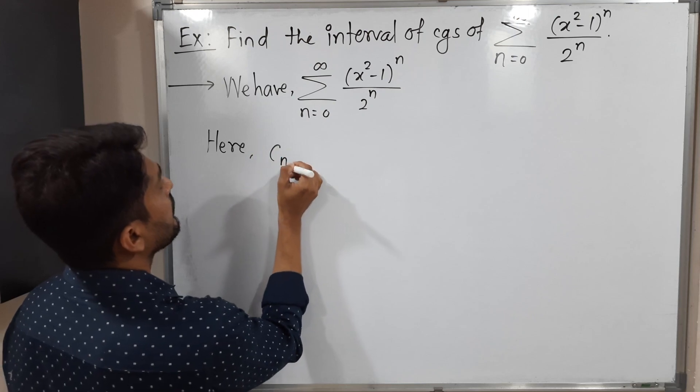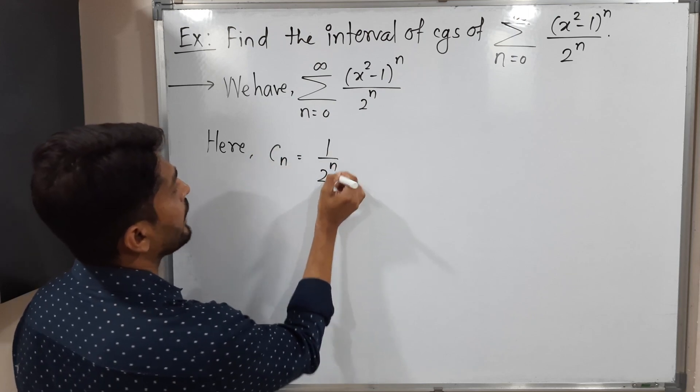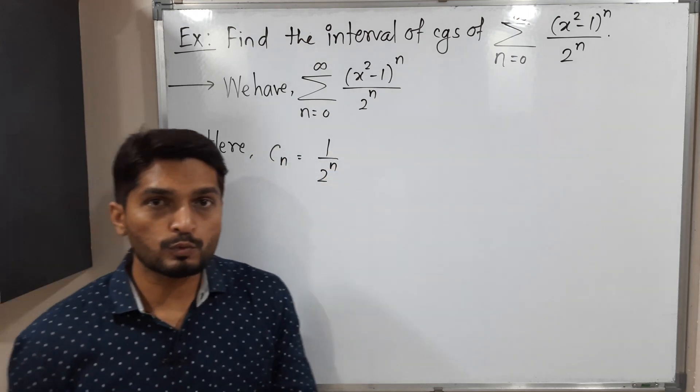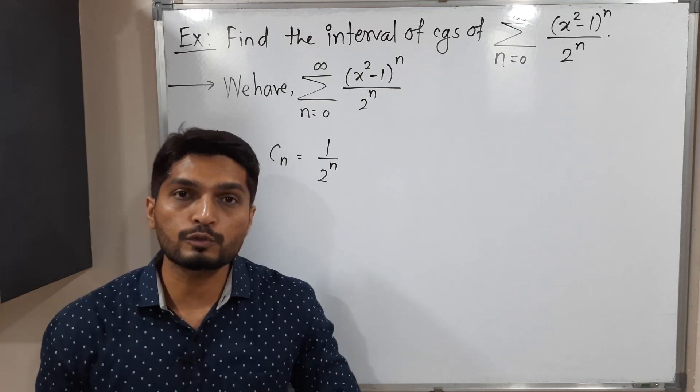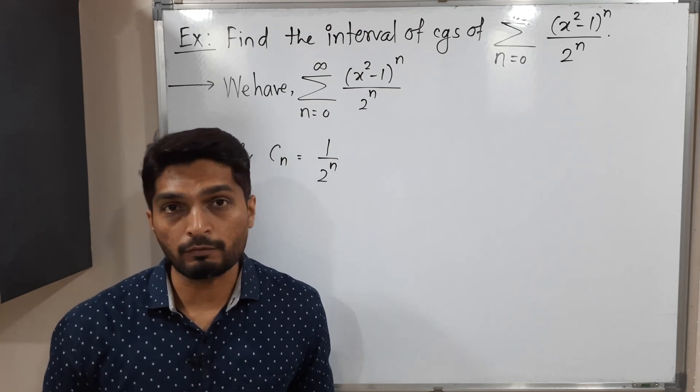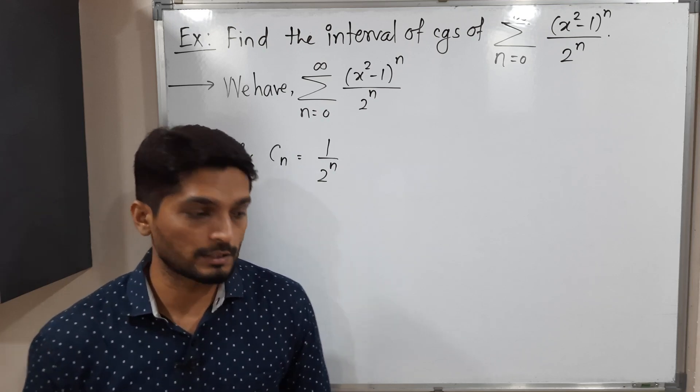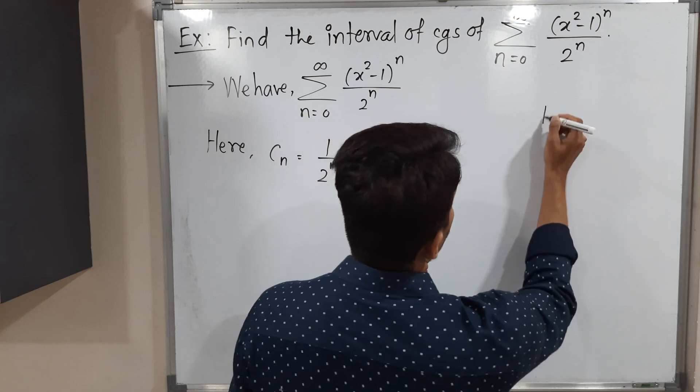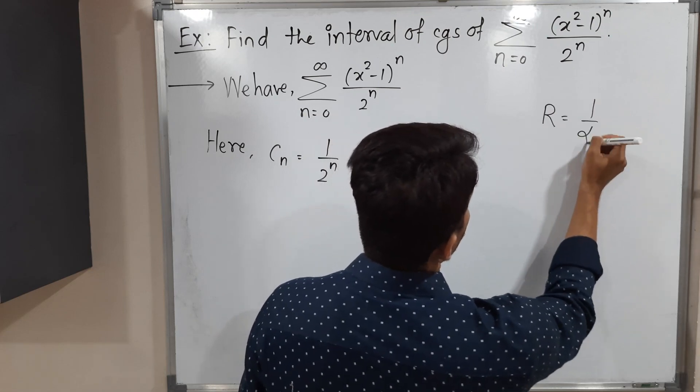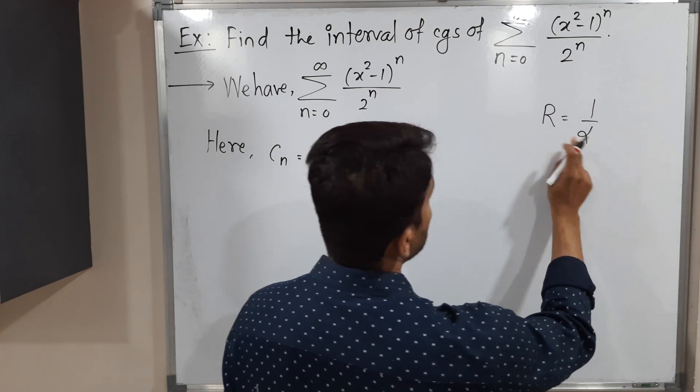Our target is to find the interval of convergence, but first of all we need to find the radius of convergence, and with the help of that we will find the interval of convergence. The radius of convergence can be calculated this way: radius of convergence R is the reciprocal of 1/α.